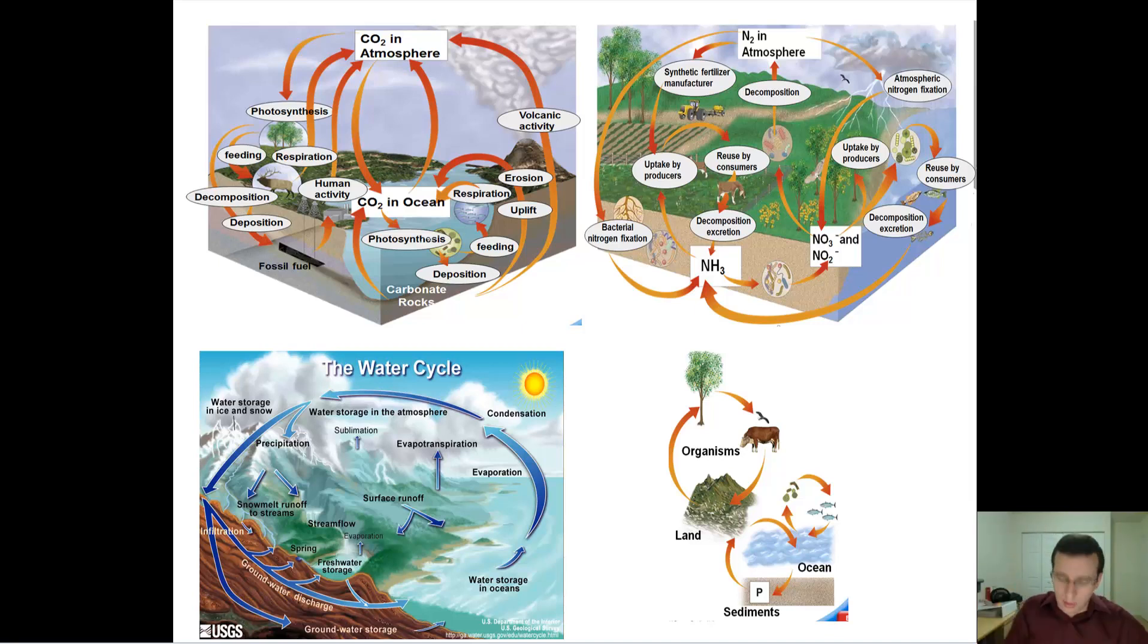That means water evaporates from the oceans and it does rain on the oceans too. It's the most common place for rain to fall. 71% of the surface is covered with oceans. But not all of the rain falls right back in the oceans. If it did, there wouldn't be any water cycle the way you see on the screen.